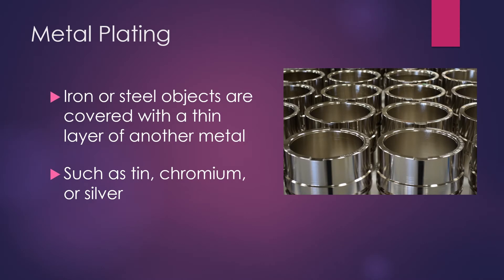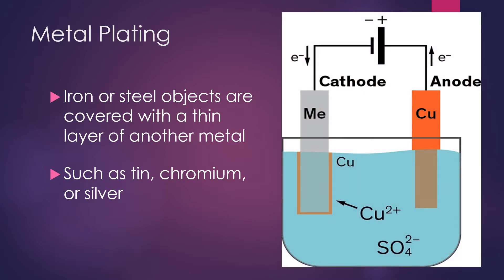This one is metal plating. Metal plating is used for iron or steel that are covered with a thin layer of another metal. Tin, chromium, and silver are most commonly used for metal plating. As this diagram shows, you have a power source and the electrons flow through — this is a copper anode and this is metal at the cathode side. The ions from copper travel to the metal and attach to it. This is electroplating, and the solution is a sulfate solution.